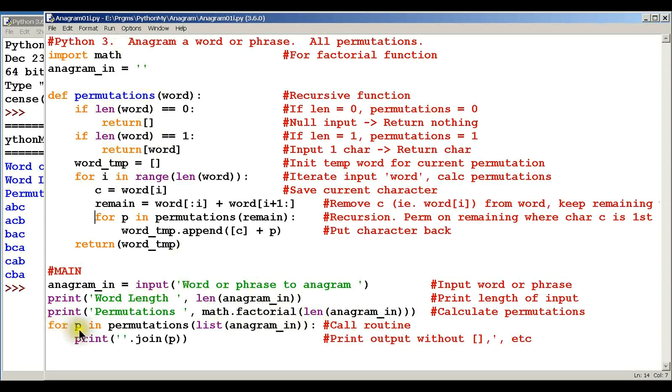And then last, this is for P in permutations of list anagram_in - so how long this thing is - we're going to go through and we're going to print the list. And this join P thing just prints without including the brackets, the commas, all that stuff. Okay, so let's run it.